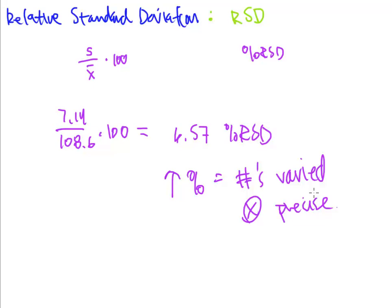So 0.0657, they're just uncomfortable with that. So we multiply by 100 to get it to an actual real number as far as percentage goes. People like 6.57 a little bit better than 0.0657. So that's percent relative standard deviation.